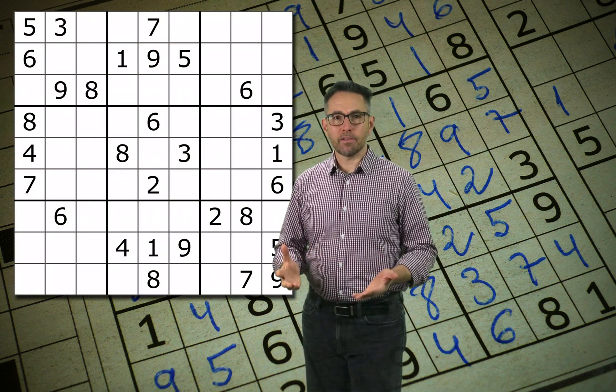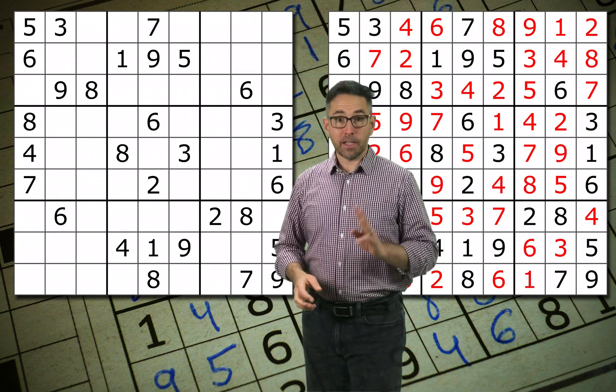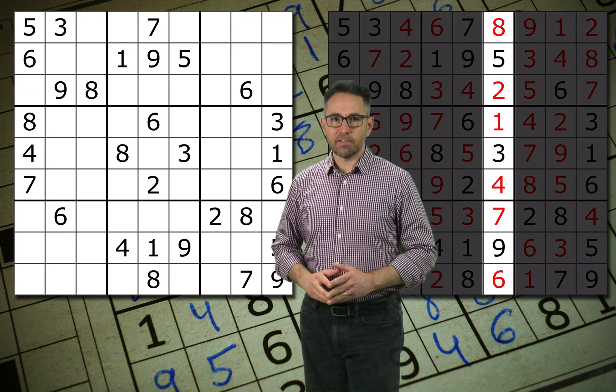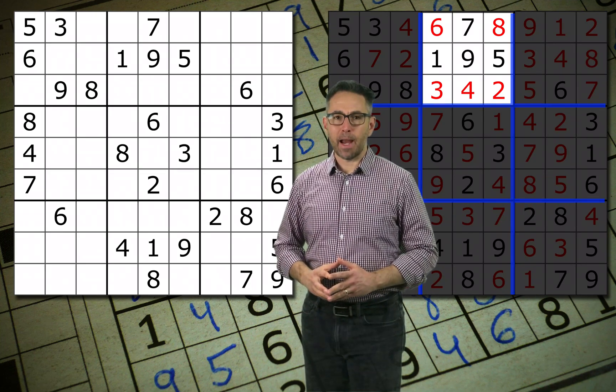You're given a 9x9 grid of squares and you have to complete the empty cells with each of the numbers 1 through 9. There are three constraints though. Each row in the Sudoku puzzle has to have each of the digits 1 through 9 one time. Each column has to have each of the digits 1 through 9 one time, and each of the three by three cells also has to have each of the numbers 1 through 9.